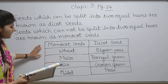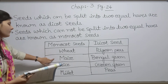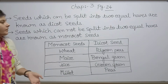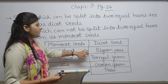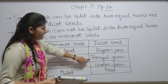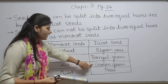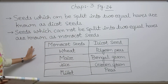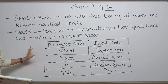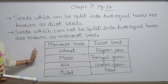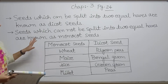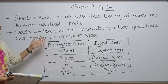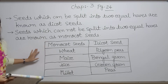The monocot seeds are wheat, maize, rice, and millet. And the dicot seeds are pea, bengal gram, and green gram. So this is about monocot and dicot — a very important topic from this whole chapter.